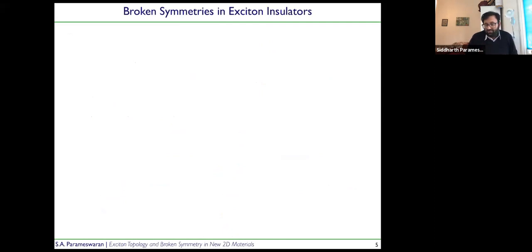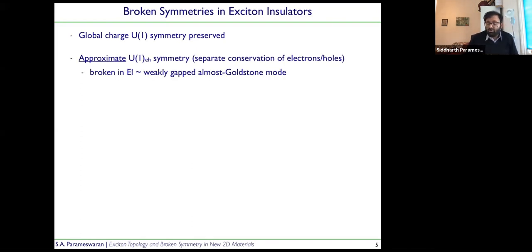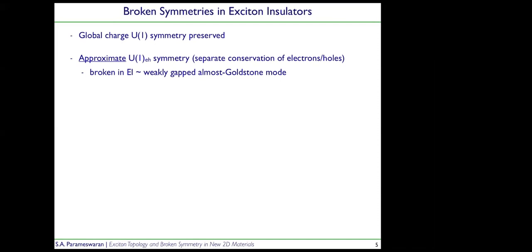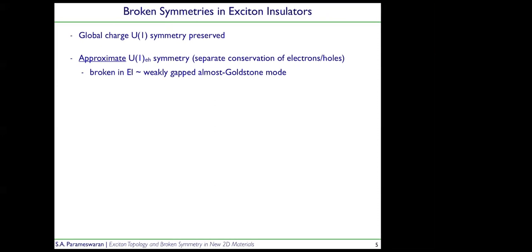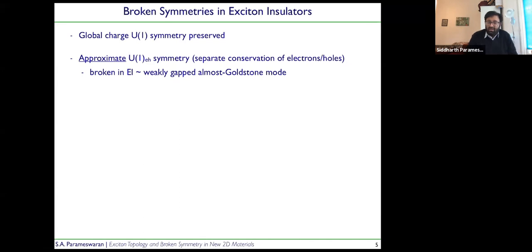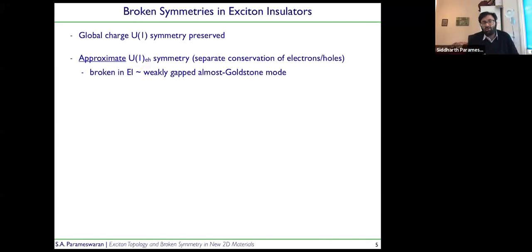What I want to focus on — and this will be important for the rest of the talk — is broken symmetries in these excitonic states, because these broken symmetries are how we diagnose exciton condensation in many examples. An audience member asks what dimension to think about. The speaker confirms: two dimensions. Unlike superconductors, exciton insulators are formed by condensation of neutral objects, so the global charge U(1) symmetry is preserved — they don't have superflow in the conventional sense. However, there's an approximate electron-hole symmetry if electrons and holes are separate.